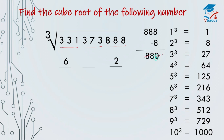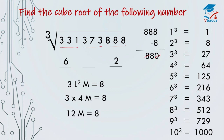Forget 8 and 0, consider 8. Apply it in the formula: 3 × L² × M = 8. Last digit is 2, and square of 2 is 4. So 3 times 4 times M equals 8. 3 fours are 12; 12 × M = 8. Forget 1, consider 2. By which number should we multiply 2 to get the digit at unit place 8? 2×4=8 and 2×9=18. There are 2 options.